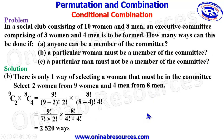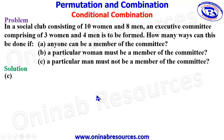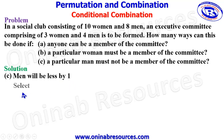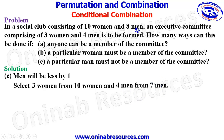So that's that for problem B. We then go to problem C. For problem C, a particular man must not be a member of the committee, which means the men will reduce to 7. We are only selecting the executive from 7 men — still selecting 4 men, but from 7. For the women, we still maintain 10 women selecting 3. So we now select 3 women from 10 women and 4 men from the remaining 7 men. Creating the combination: 10C3 multiplied by 7C4.